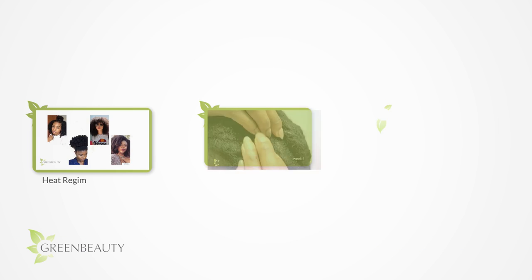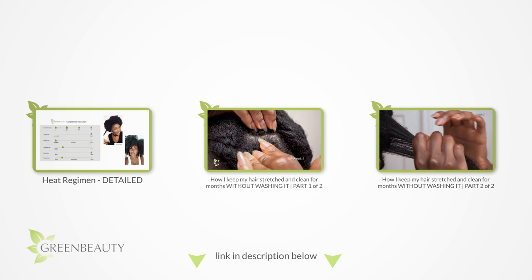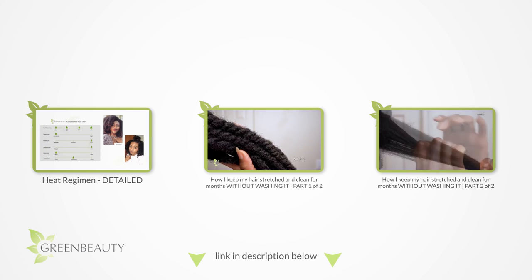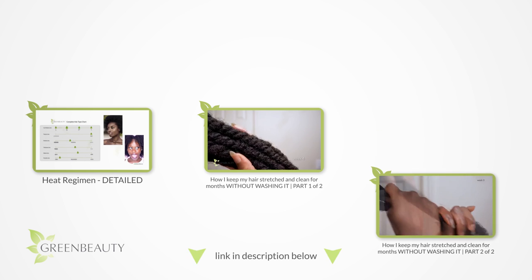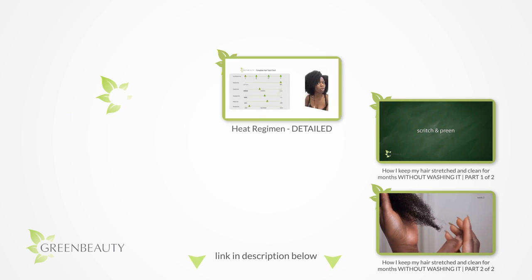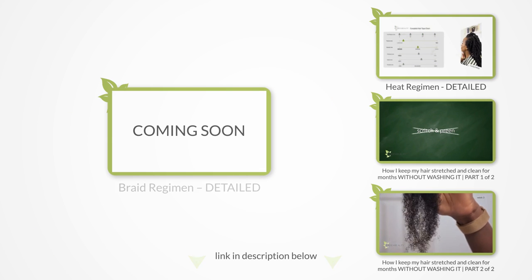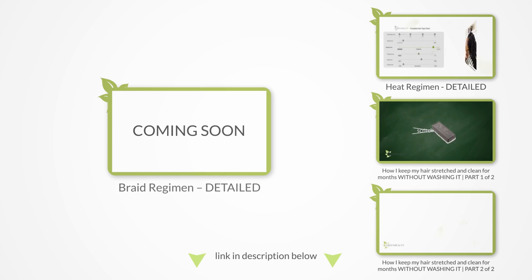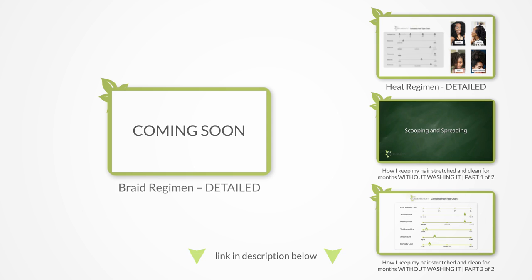Personally, I touch my hair once a week when I scoop and spread, and at most wash, treat, and blow out my hair once a month or so. Every year, I also try to carve out about three months where I put my hair into braids. I'll be posting a detailed video on my braid regimen soon, so stay tuned.